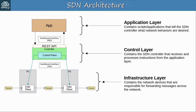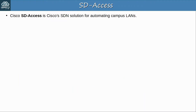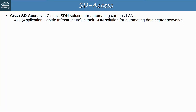We still haven't looked at a specific example of SDN, so let's take a look at one: Cisco Software-Defined Access. Cisco SD Access is Cisco's SDN solution for automating campus LANs — office wired and wireless LANs, for example. Cisco has other SDN solutions: ACI, Application-Centric Infrastructure, is their SDN solution for automating data center networks, where Spine-Leaf Architecture is used extensively. Cisco also has SD-WAN, their SDN solution for automating WANs. But for now let's look at SD Access.